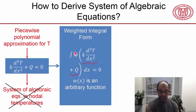You multiply it by a weighting function, and that weighting function is an arbitrary function. So this is an arbitrary function. And you integrate it over your domain, so in our case, from zero to L. And that should be zero.